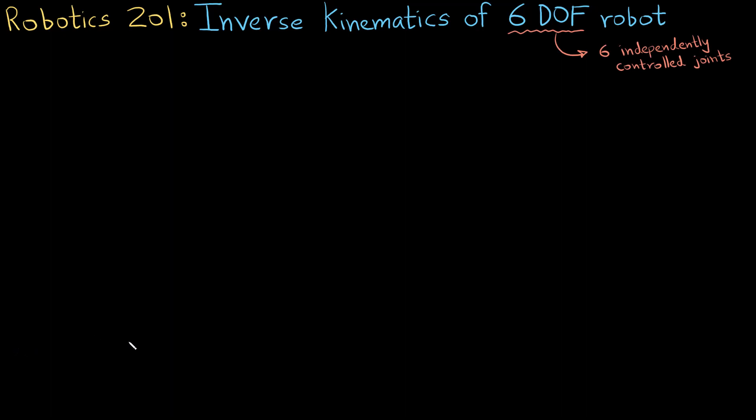When we say that a robot is a 6 degree of freedom robot, we mean that it has got 6 independently controlled joints or it has got 6 motors or actuators which we can independently control.